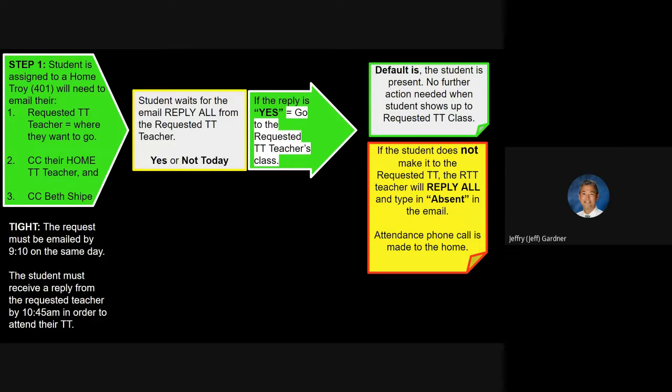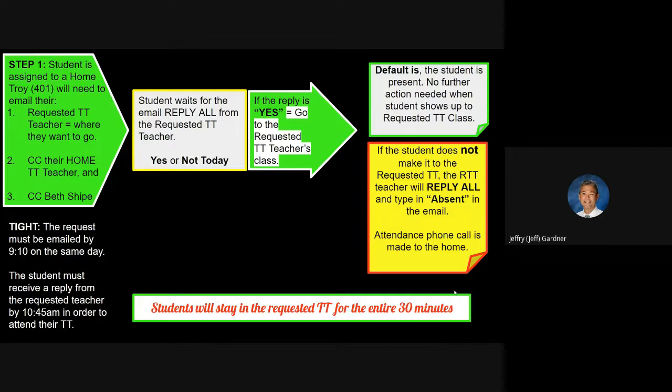If the student does not make it to the requested Troy time, the requesting Troy time teacher will reply all and they're just going to type in the word 'absent.' So that absence has now been recorded with Ms. Scheip, recorded with their home Troy time teacher who needs to make that attendance adjustment in their Troy time because they're still a home Troy time student - they've just requested to go somewhere else. When all that happens, students, your parents are going to get a phone call home that you didn't make it to where you're supposed to go. We're going to have this electronic paper trail, so everything's covered. It's allowing students to do the right thing, and all we expect you to do is do the right thing. Then you can go to where you need to go in most cases.